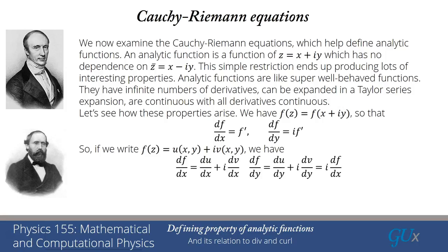And so what we find is df by dx will just be du by dx plus i dv by dx. And similarly, df by dy will be du by dy plus i dv by dy. But now we use the property that that's equal to i df dx.